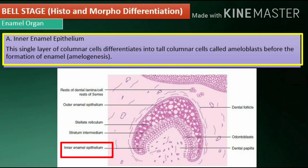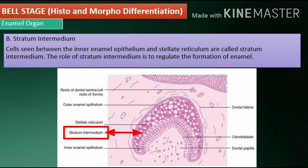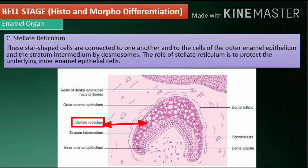Inner enamel epithelium: This single layer of columnar cells differentiates into tall columnar cells called ameloblasts before the formation of enamel, known as amelogenesis. Stratum intermedium: Cells seen between the inner enamel epithelium and stellate reticulum are called stratum intermedium. Their role is to regulate the formation of enamel. Stellate reticulum: These star-shaped cells are connected to one another and to the cells of the outer enamel epithelium and the stratum intermedium by desmosomes. Their role is to protect the underlying inner enamel epithelial cells.